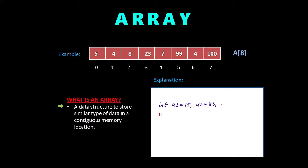To create an array, you first write the data type name. Here we are storing integers, so we write 'int', then the name of the array, and in square brackets you write how many items are in the array. To store items, you can write all the values in curly braces. This '100' means there are 100 items in the array. Remember that arrays start from index 0, so the range is 0 to 99. To print the first item we write a[0], which prints 75. This is how we create and initialize an array.